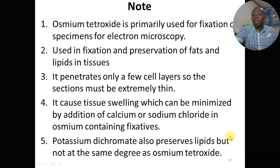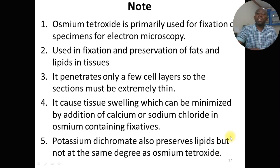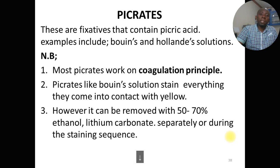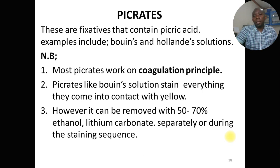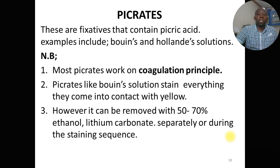Osmium tetroxide can cause tissue swelling, which can be minimized by addition of calcium or sodium chloride to osmium-containing fixatives. Potassium dichromate also preserves lipids but not to the same degree as osmium tetroxide. The best fixative for lipid preservation would be osmium tetroxide. Choice of fixative depends on the studies intended or the type of tissue at hand.